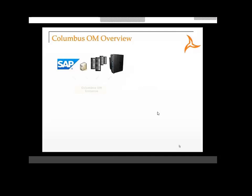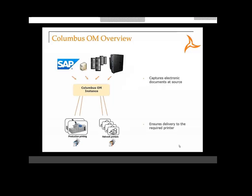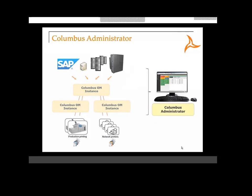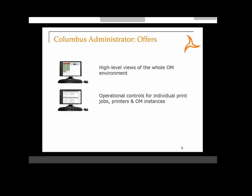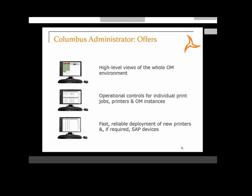Let's take a look at this. Columbus OM software is designed to capture electronic documents as they're produced. These documents are stored within Columbus OM before being passed to the relevant printers for printing. In some cases, these printers could be in different locations or countries, and the documents are then securely transferred across multiple OM instances. Columbus Administrator is a web user interface that helps support staff manage these environments, providing a high-level view of the whole OM environment and letting administrators control print jobs, printers, and OM instances. It also simplifies the deployment of printer configuration to OM and optionally SAP.